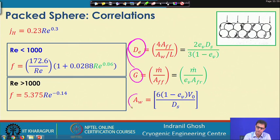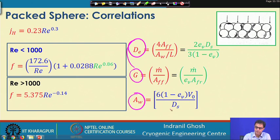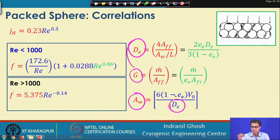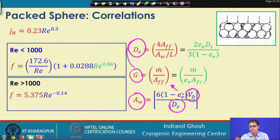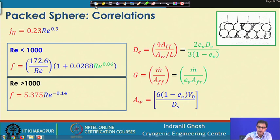Another important parameter is the surface area, which is related to Ds (the mean sphere diameter) and is correlated with the void fraction and V0, the volume associated with the regenerator. All these parameters can be used when designing or simulating regenerators.